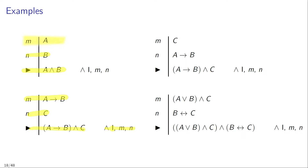Now, the order of the two conjuncts doesn't really matter. So in the previous example, if in line M you have the conditional 'if A then B' and in line N you have the sentence C, you can infer the conjunction 'if A then B and C'. You can also reverse the order: if in line M you have the sentence C and in a later line you have 'if A then B', you can still infer the conjunction 'if A then B and C' and justify this using conjunction introduction.